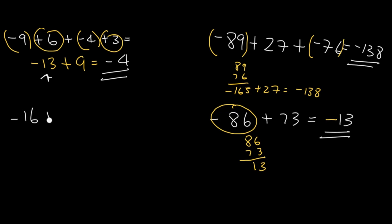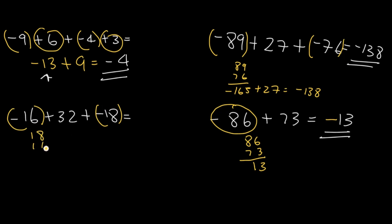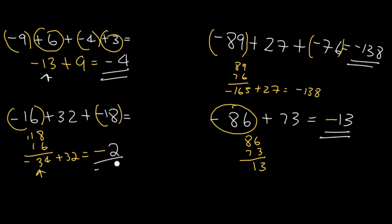Pause the video and try to solve this problem. Group the negatives: negative 16 and negative 18. Let's add them. 8 plus 6 is 14, carry the 1, and that makes 34. So the result is negative 34. Take the sign of the bigger number, which is negative 34. This gives us a final answer of negative 2.